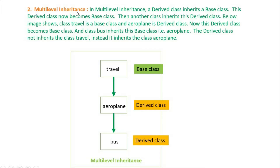Multi-level inheritance. In multi-level inheritance, a derived class inherits a base class. This derived class now becomes a base class. Then another class inherits this derived class. The image shows class Travel is a base class and Aeroplane is a derived class.